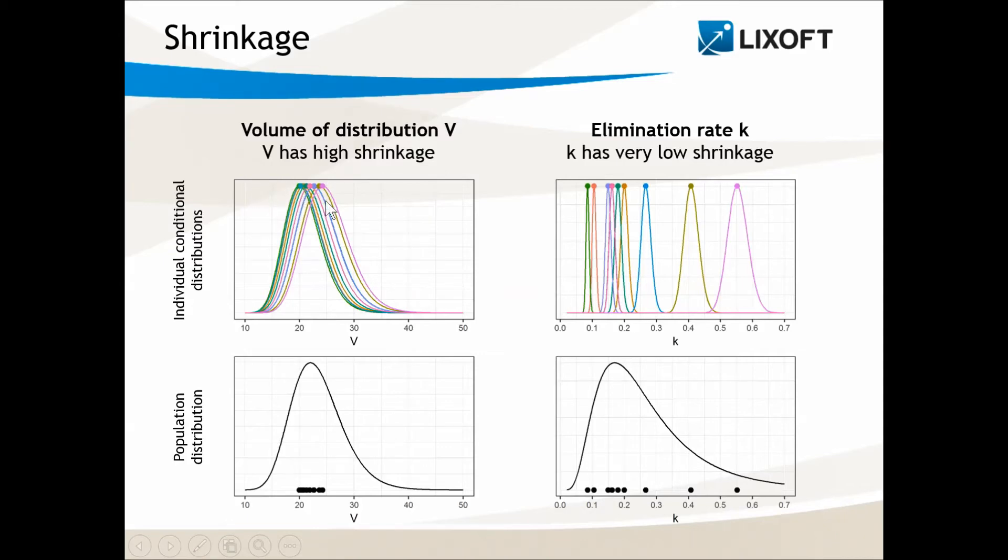If for each individual we take the mode and pull these values together, we see that all values are concentrated around the typical population value. The black curve represents the population distribution.